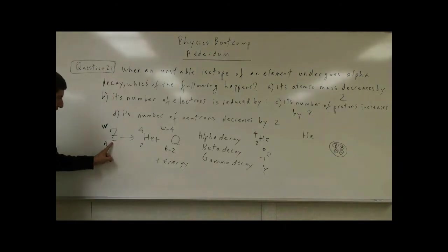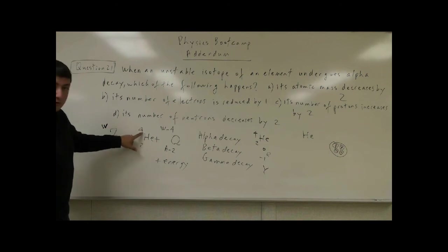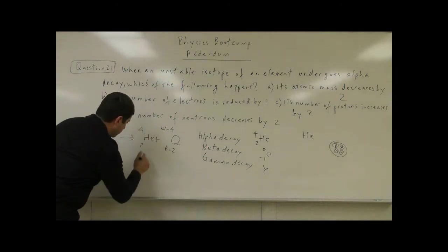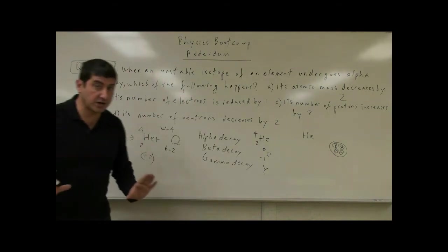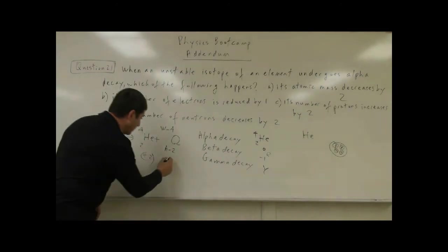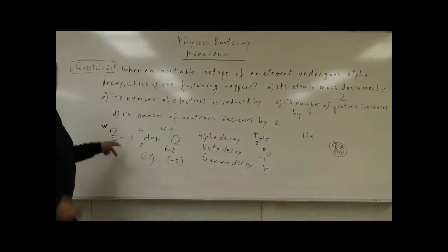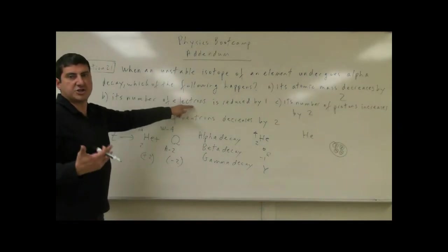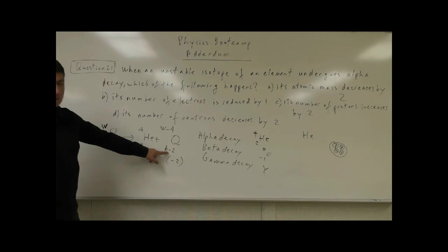In terms of charge: if the original isotope was uncharged, the net charge should still be zero. The helium nucleus He-2-4 has no electrons — just two protons — so its charge is +2. The daughter isotope is missing two protons while its electrons stay the same, so its charge is -2. Net charge: (+2) + (-2) = 0, so charge is conserved. Therefore the number of electrons is not changed at all, and B is false. Choice C: its number of protons increases by two — no, it actually decreases by two. C is false.